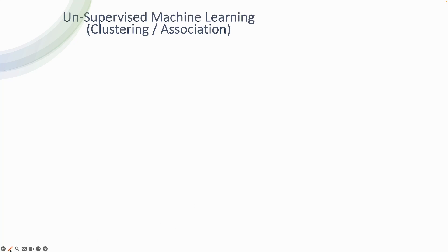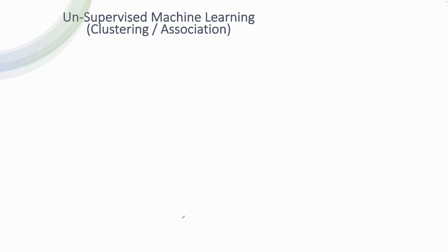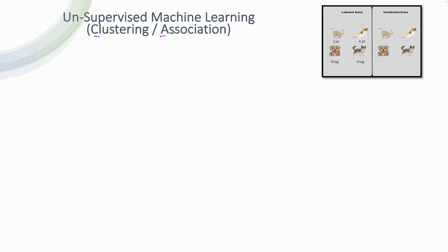After having a good understanding of supervised machine learning, it's now time to take a look into unsupervised machine learning. Remember, with supervised machine learning you always work on labeled data — inserting pictures of cats and dogs and labeling the output. This is why it is called supervised machine learning, because your labeled data acts as your supervisor.